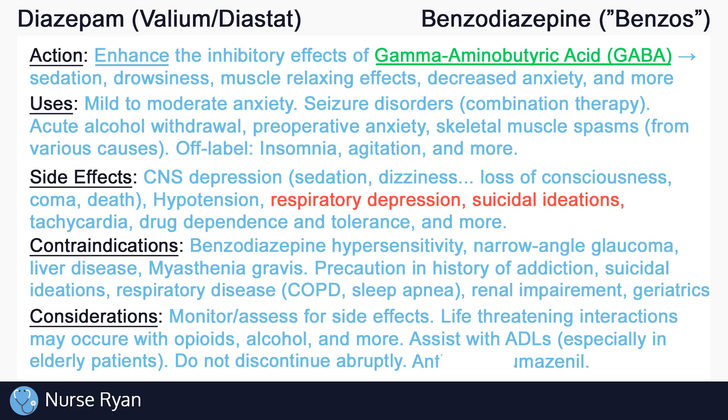For treatment of overdose, a benzodiazepine antagonist such as flumazenil may be used as an antidote. Flumazenil blocks or inhibits GABA receptors, reducing the symptoms of overdose.